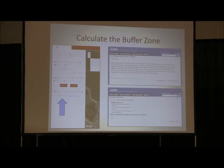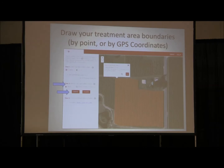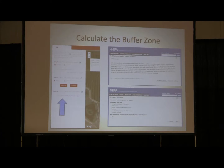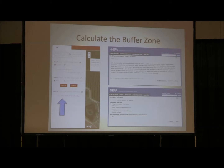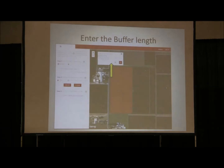The next thing to do is calculate your buffer zone. Once you have your treatment area, a box pops up showing the acreage — for example, 8.4 acres — so if you're not sure of your field size, you can figure it out here. We don't have the buffer calculator on our site; the EPA has a buffer zone calculator on their site, which is where it will stay so that any changes they make are reflected there. To use it, you'll need to know your fumigant, application rate, field size, any buffer credits, and method of application.